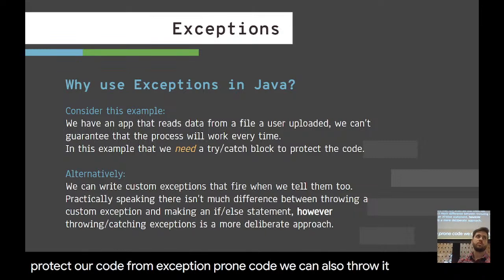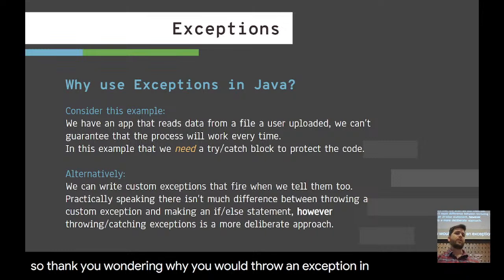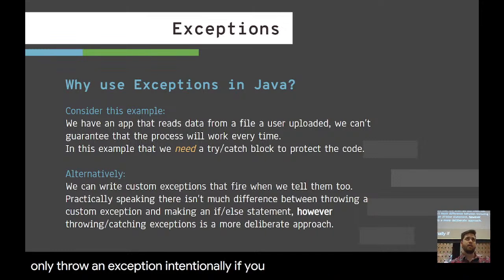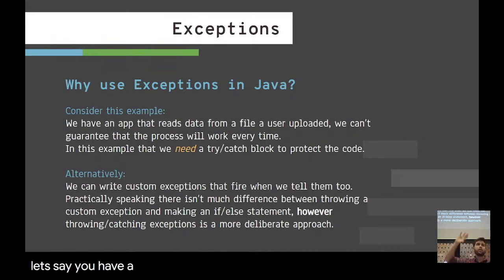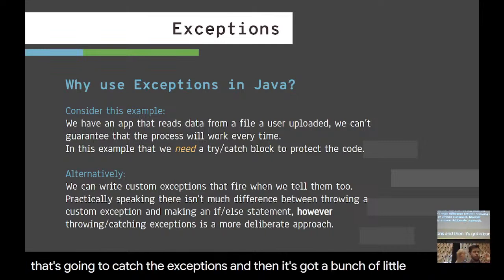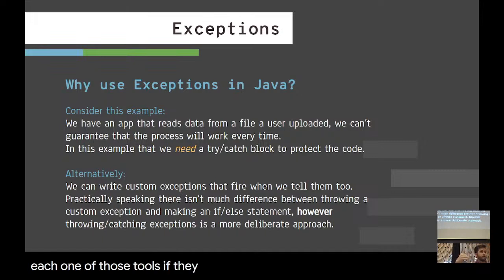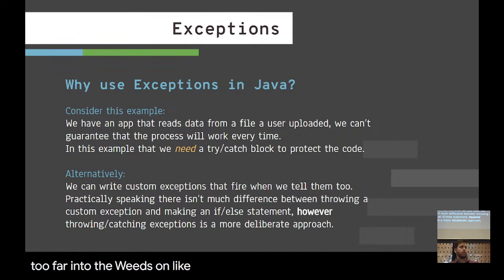We can also throw exceptions intentionally. You would only throw an exception intentionally if you had a plan in place to catch it. An example where this is useful: you have an application with a main part that catches exceptions, and a bunch of little tools — each one, if it fails, throws an error, and all those errors are handled in one spot. We're not going to get too far in the weeds on throwing exceptions, but it's a good design pattern.